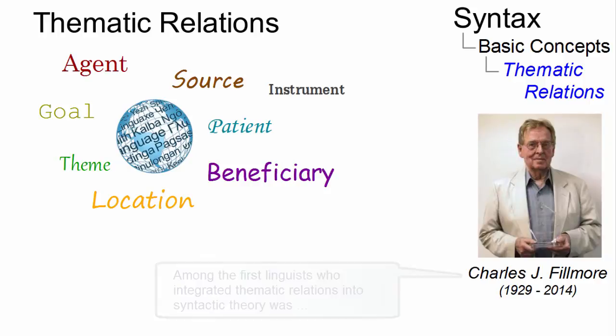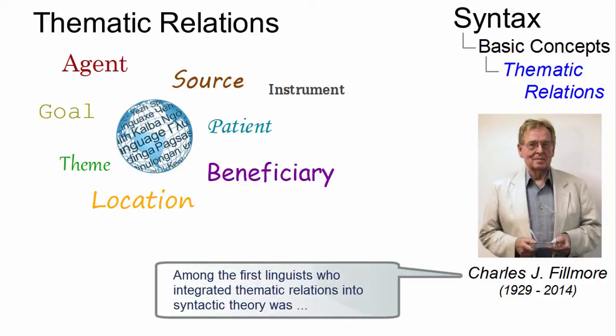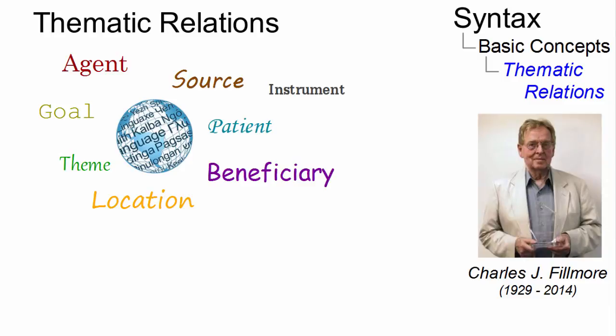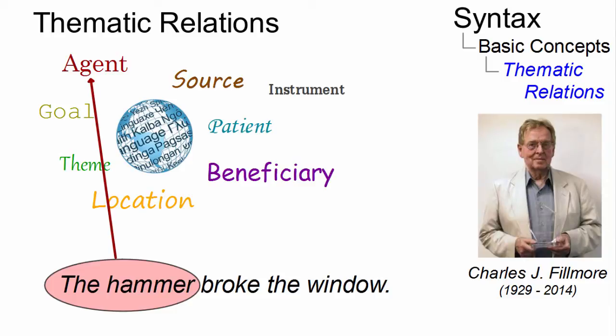Linguists define up to fifteen thematic relations. These are language independent, but admittedly the boundaries are often not clear. For example, in 'the hammer broke the window', some linguists treat 'hammer' as an agent, some others as an instrument, and again some others as a role different from these.